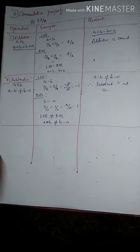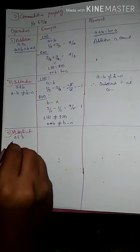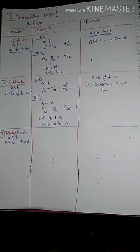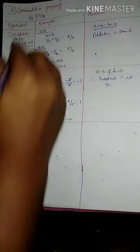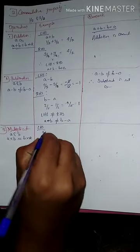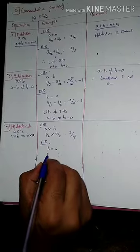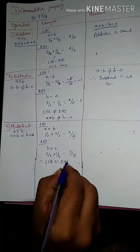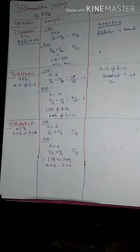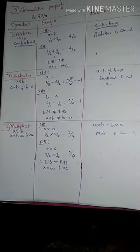For multiplication, for any two rational numbers A and B, A into B equals B into A. Taking A as 1/2 and B as 3/2: LHS is 1/2 into 3/2 equals 3/4, and RHS is 3/2 into 1/2 equals 3/4. LHS equals RHS, so A into B equals B into A. Therefore, multiplication is commutative.